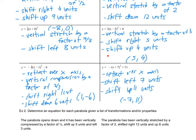For the next one, we have a reflection over the x-axis, a vertical compression by a factor of 2 thirds, shift right 1 unit, and down 6 units, making the vertex 1, negative 6. Finally, we have a reflection over the x-axis, and we don't have an a value other than 1 so you don't need to state a stretch or compression. Shift left 7 units and shift up 11 units, making the vertex negative 7, 11.